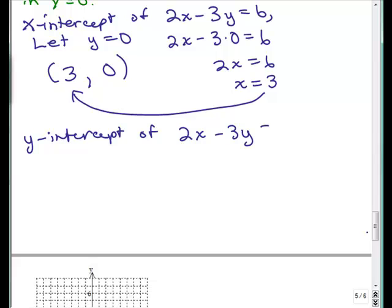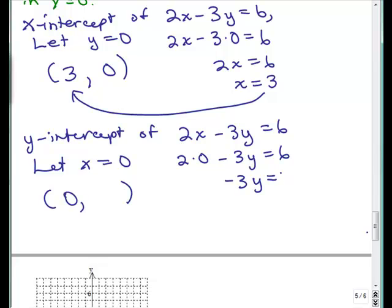The y intercept of 2x minus 3y equals 6. If it's on the y axis, x is always 0, so we're going to let x equals 0. So, we put in 2 times 0 minus 3y equals 6. Be careful of your negative sign. When you divide by negative 3,